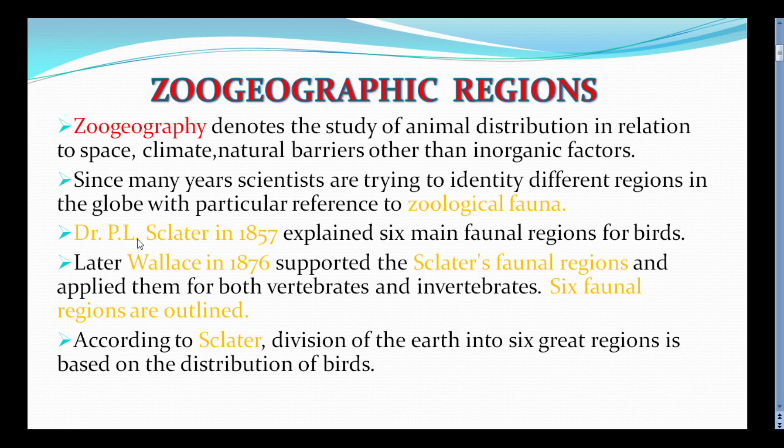Dr. P.L. Sclater, in 1857, explained six main faunal regions based on bird distribution. He divided the world into six main faunal regions based on bird distribution.